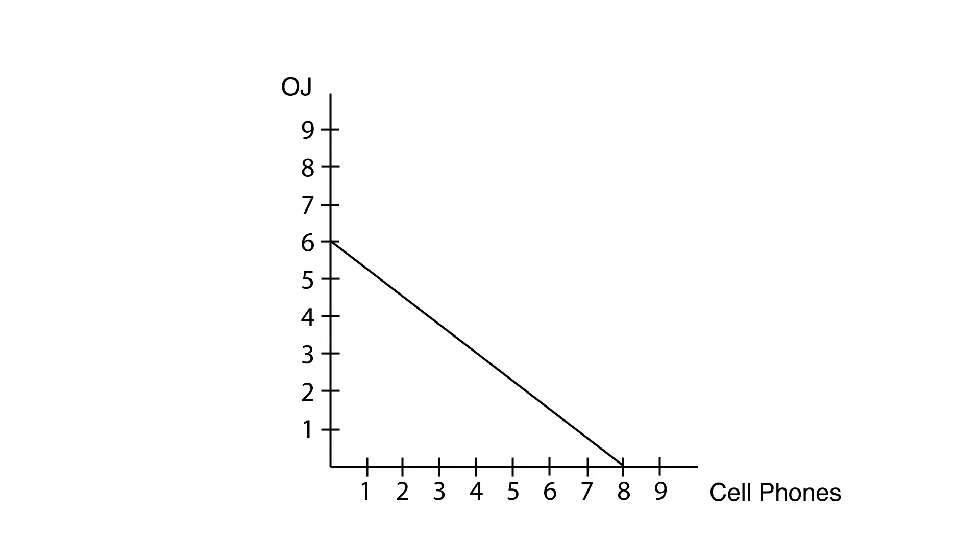Well, it turns out I've been oversimplifying. In the real world, a production possibility frontier probably isn't straight. It's curved.